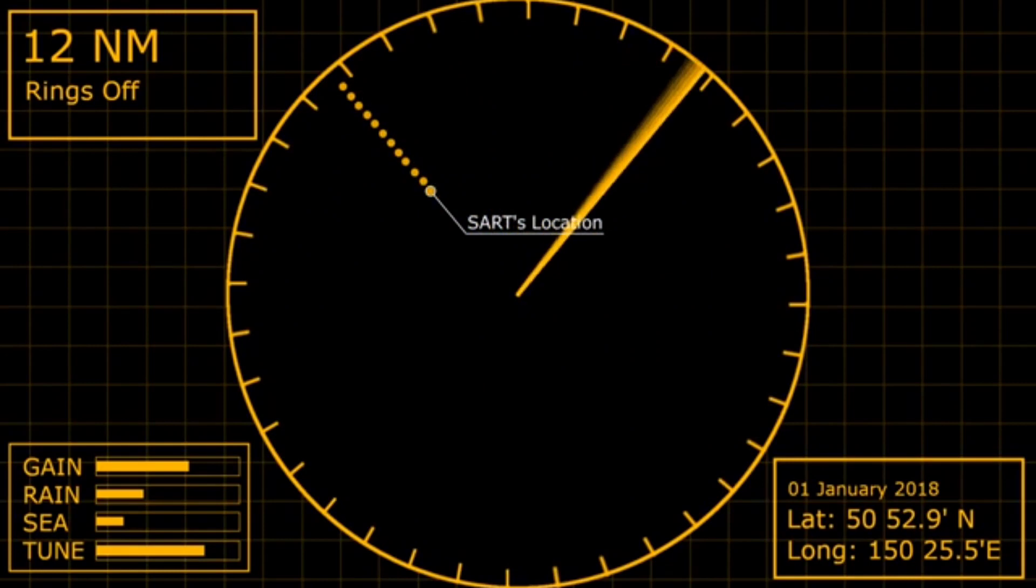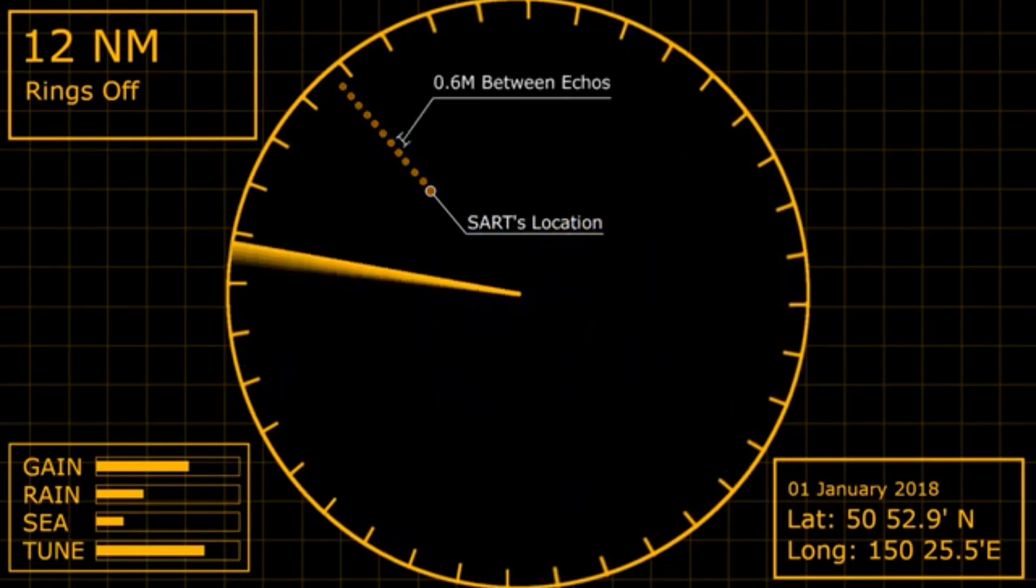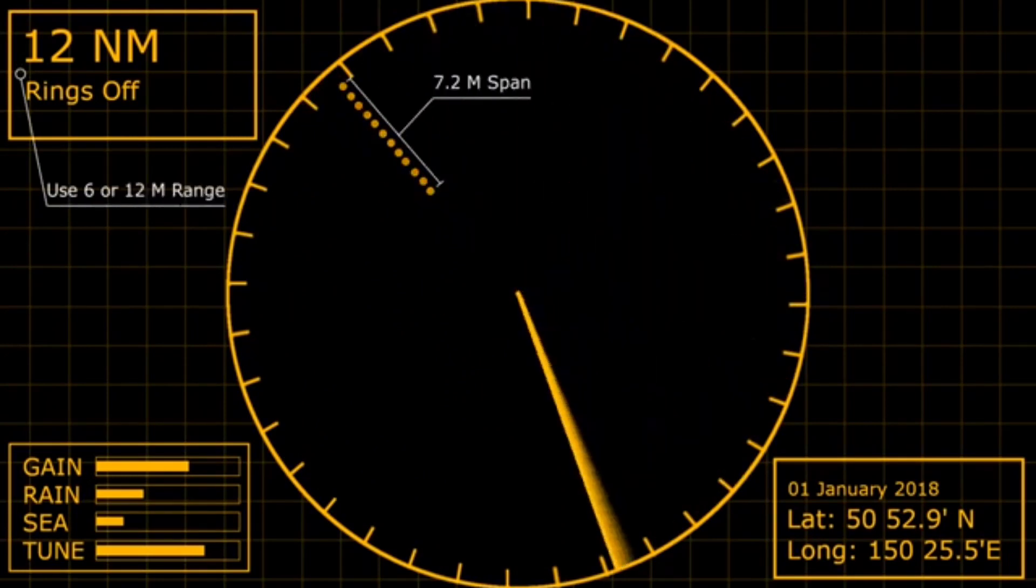The extra echoes will be 0.6 miles apart, so they can be seen best on a 6 or a 12 mile range setting, as they will span a total of 7.2 miles across the screen.